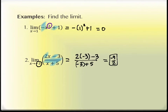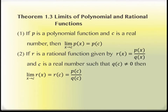So three methods so far: graphical, numerical, and now algebraic. When we're able to simply plug the number in, algebraic is the easiest — way less work. Who really liked doing that table on the quiz? Probably none of you. Unfortunately, it doesn't always work that we can simply evaluate. There are problems that happen sometimes, so let's look at a few more theorems before we get to those.